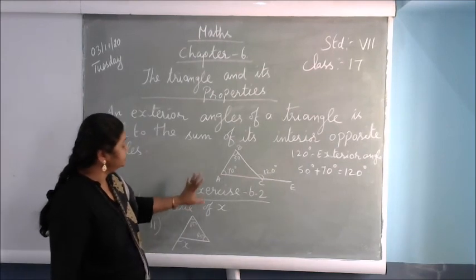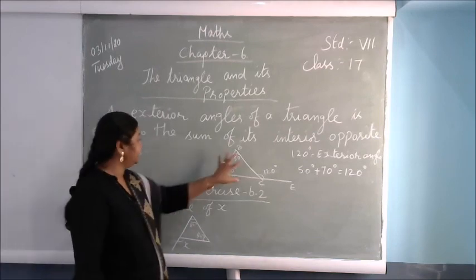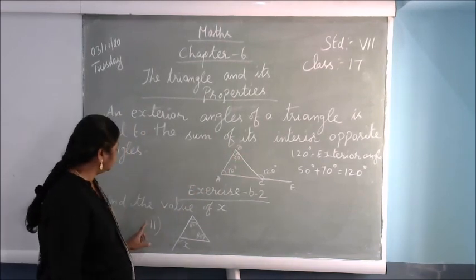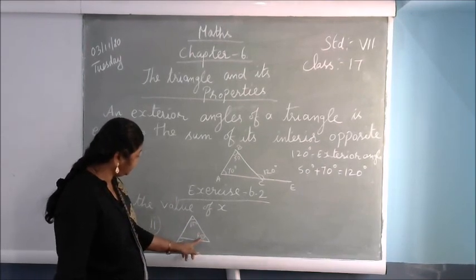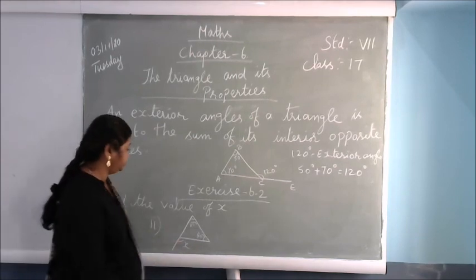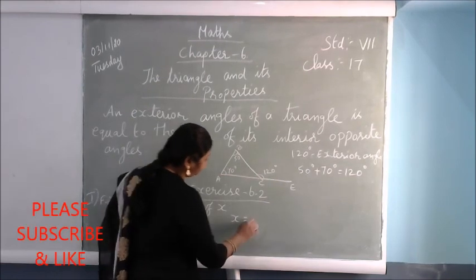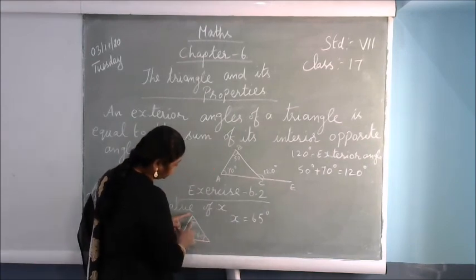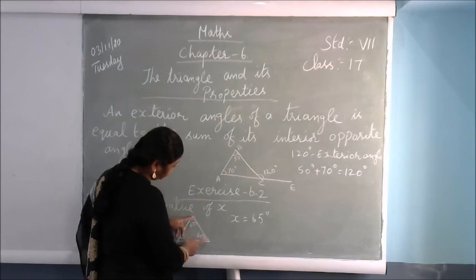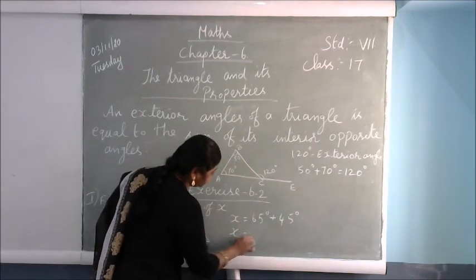Now we are going to solve the sums in Exercise 6.2 — find the value of X. For the second sum, the two interior angles are 65 degrees and 45 degrees. The exterior angle X equals the sum of the two interior opposite angles: X equals 65 plus 45, which is 110. Wait — X equals 100.